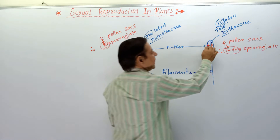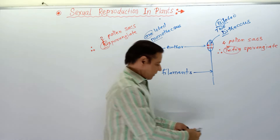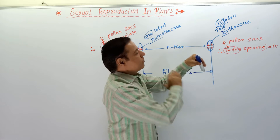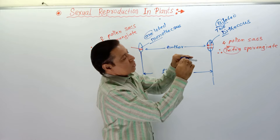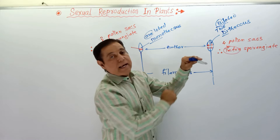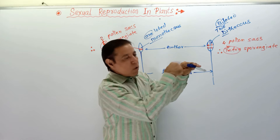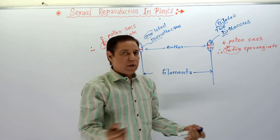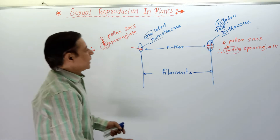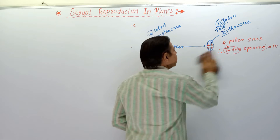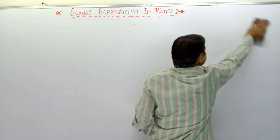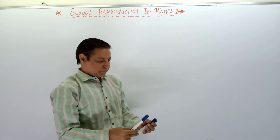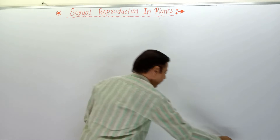When we take a transverse section passing through a bilobed anther, we observe two lobes. In between them there is a connective. There is also the wall of the anther and the pollen chambers inside which pollen grains are developed. We will now learn about the histology — the TS — of the anther. The anther is the apical, fertile, reproductive part of a stamen, held by the sterile filament. One flower contains few to many stamens.